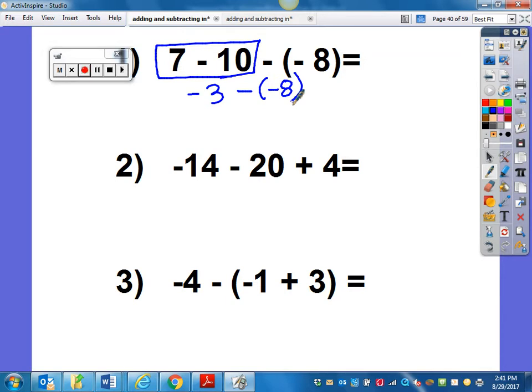Negative 3 minus negative 8. Now we get to the part where if I have two negative signs and they're right next to each other, I can do the additive inverse principle and change them into one big plus sign.